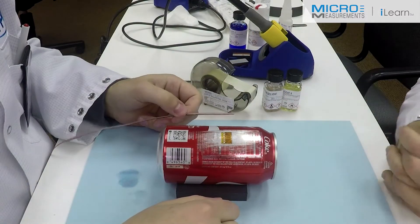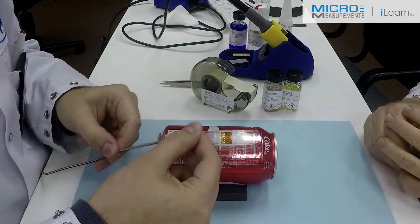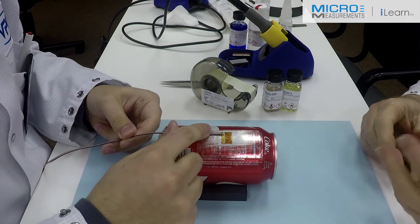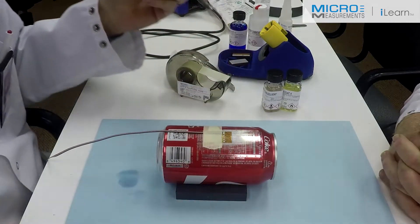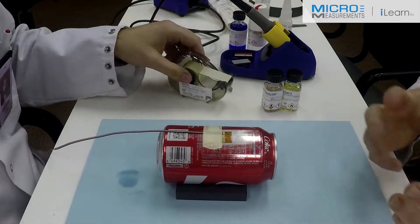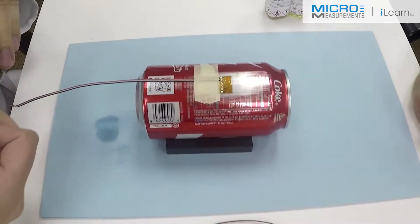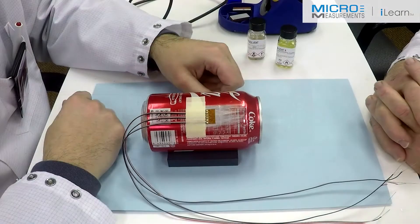The next step, we'll add the lead wire system to each individual gauge. It's a three-element rosette, so we'll have a total of three wire connections to the gauge. And the other two wires will be similar.